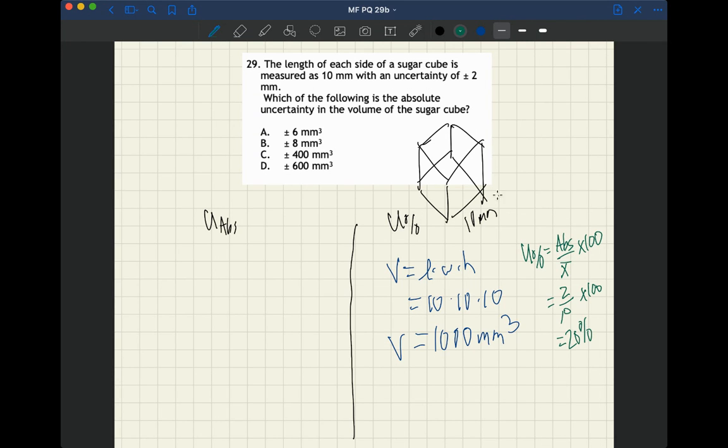So it's 10 millimeters plus or minus 20 percent. Since we are taking this side and multiplying it three times, that means the percent uncertainty is 20 plus 20 plus 20 or 60 percent.